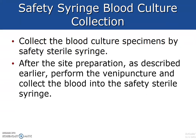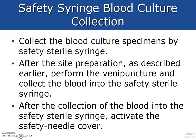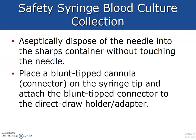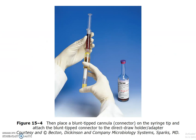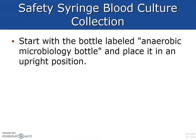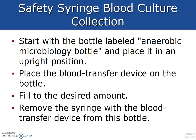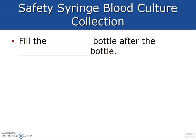This is the procedure using a syringe — review this on your own as we will have a detailed lab in class. To transfer blood from a syringe to the blood culture bottles, start with the anaerobic microbiology bottle and place it in an upright position. Place the blood transfer device on the bottle and fill the desired amount. Prior to filling the bottle, clean the caps with alcohol. Fill the aerobic bottle after the anaerobic bottle.